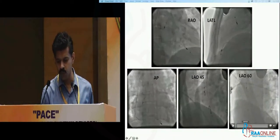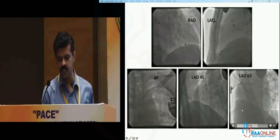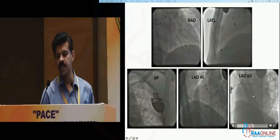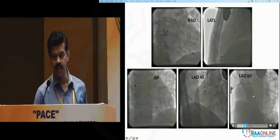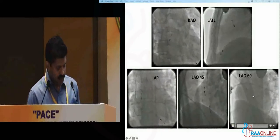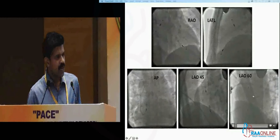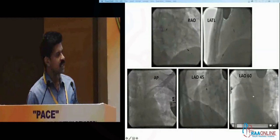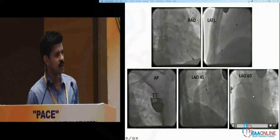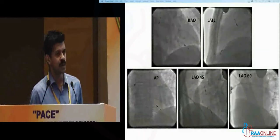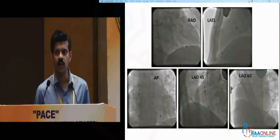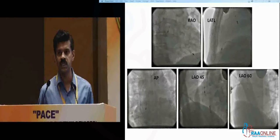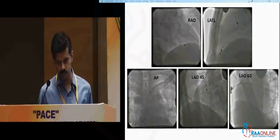The only two views that will tell us where the apex is are the right anterior oblique and the lateral view. In practice, it's sufficient if the RAO looks good, but if there is any doubt in the RAO, we must check the lateral view.